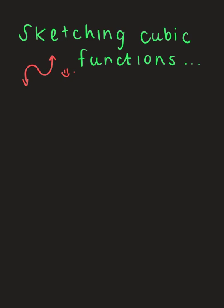Hello everyone and welcome to the lesson. We will be learning about sketching a cubic function. A cubic function is in the form f(x) = ax³ + bx² + cx + d. Before we start getting really stuck in with drawing these graphs, there are a few things I'd like to run through with you, especially around the orientation of your graph and the stationary points.